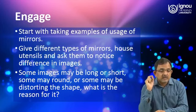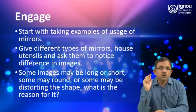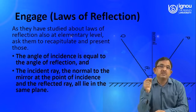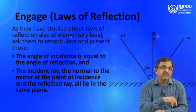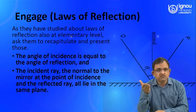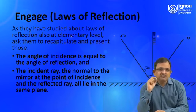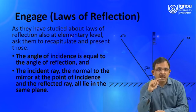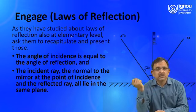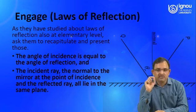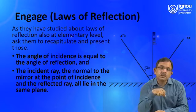Now the question is why these differences happen. To explain that, you need to help students recall the laws of reflection which they have already studied at the elementary level, perhaps in class 7 or class 8. Ask them to present: in a plane mirror, the angle of incidence is equal to the angle of reflection, and the incident ray, the normal to the mirror, and the reflected ray all lie in the same plane.